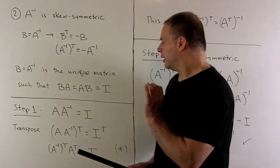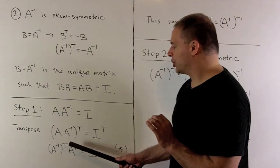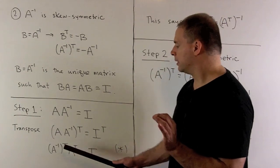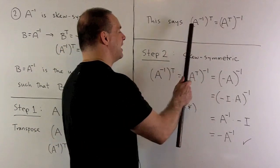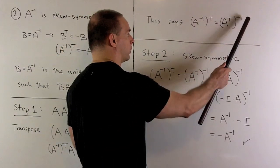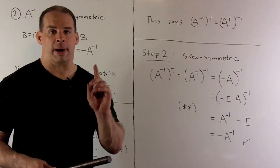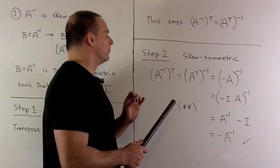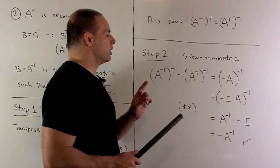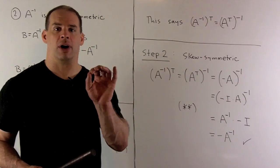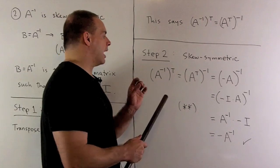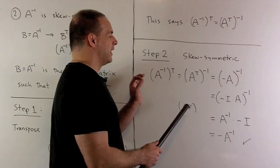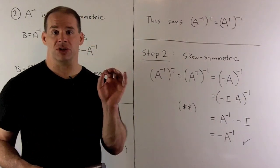Note that if B equals A inverse transpose, that means the inverse of A transpose equals B. So that gives us: A inverse transpose equals A transpose inverse. For the next step, we want to push through the skew-symmetric property and show that A inverse transpose equals minus A inverse. If we take A inverse transpose, we can switch using step one — and then A transpose equals minus A by definition of A being skew-symmetric.